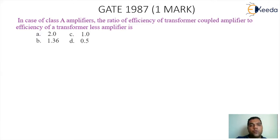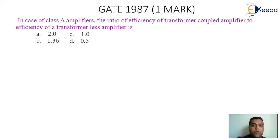Option A: 2. Option B: 1.36. Option C: 1. And Option D: 0.5.